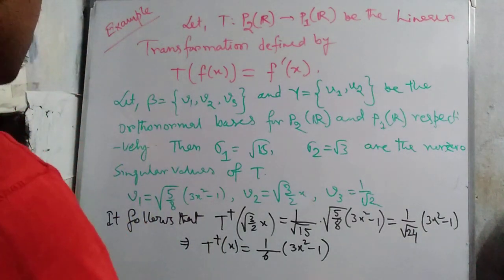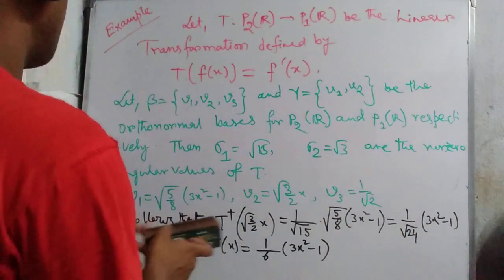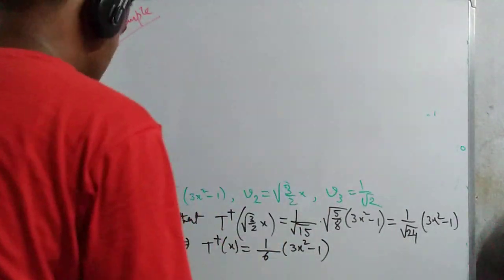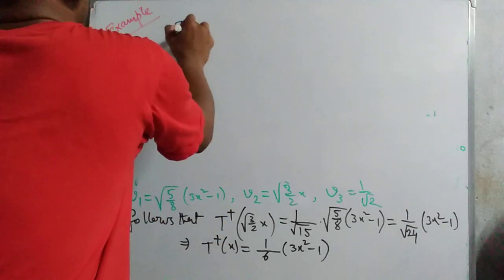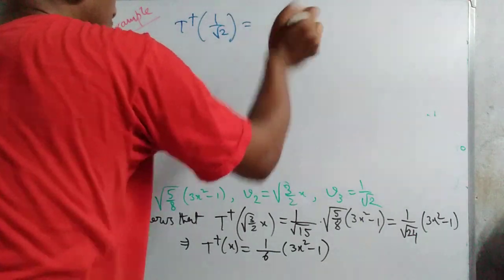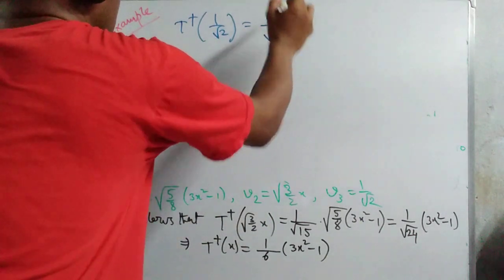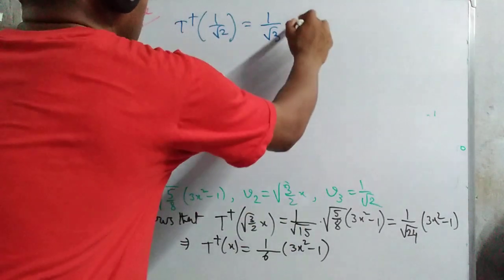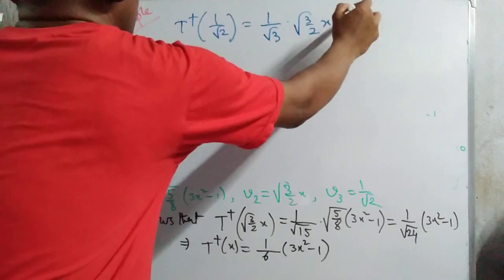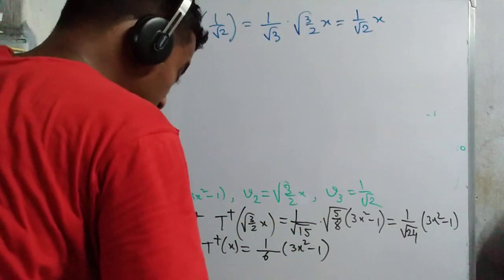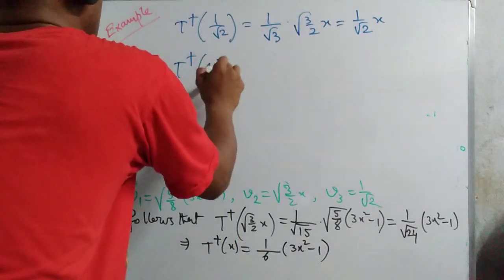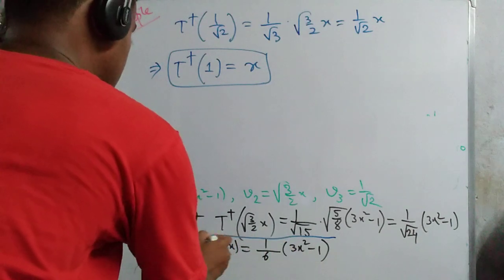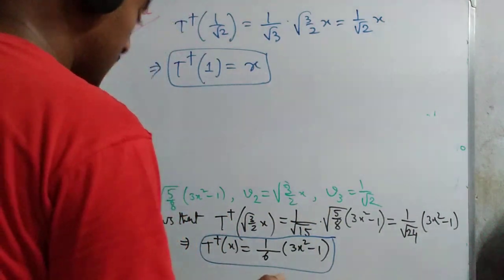From these results, T†(x) = (1/6)(3x² - 1) and T†(1) = x. Thus for any polynomial a + bx in P₁(ℝ), we have T†(a + bx) = a·T†(1) + b·T†(x) = ax + b·(1/6)(3x² - 1).